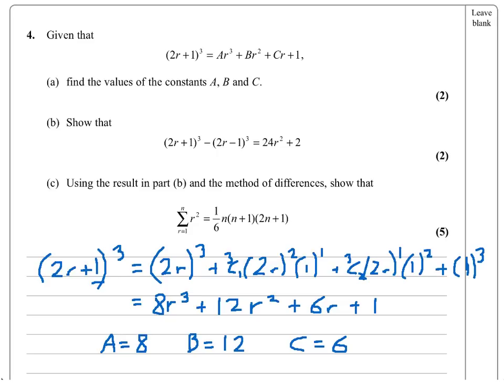There's two marks: a method mark either for binomial expansion or just multiplying it out, and an accuracy mark for getting A, B, and C all correct.